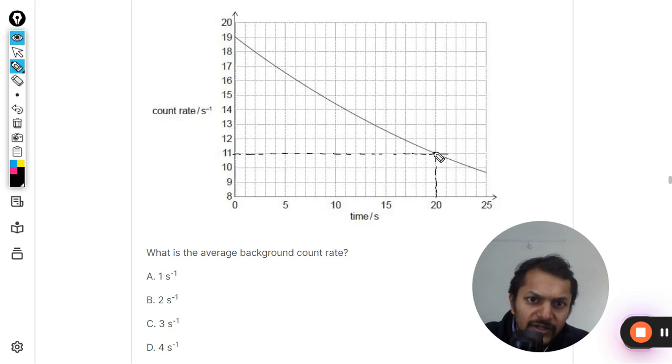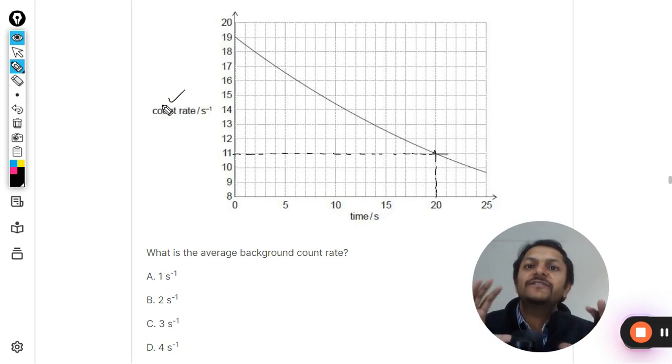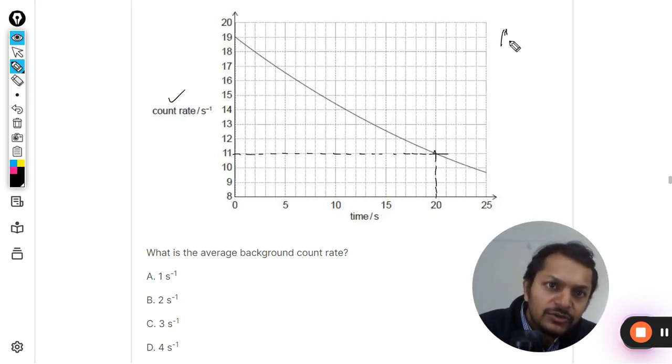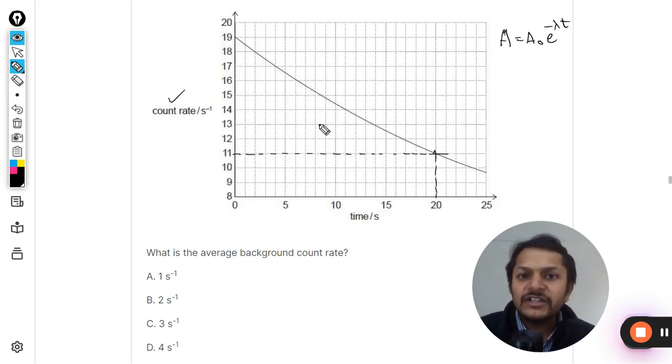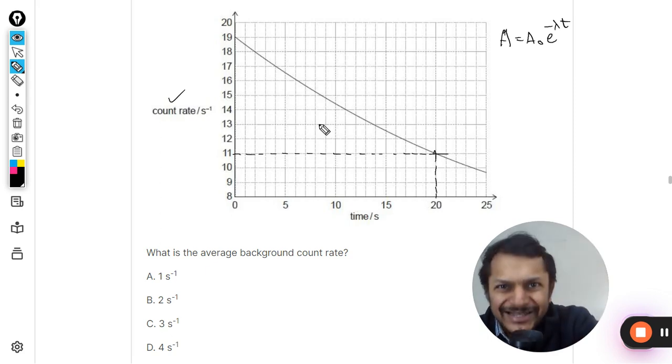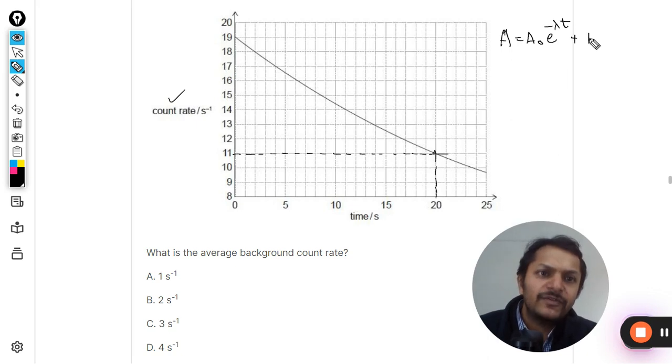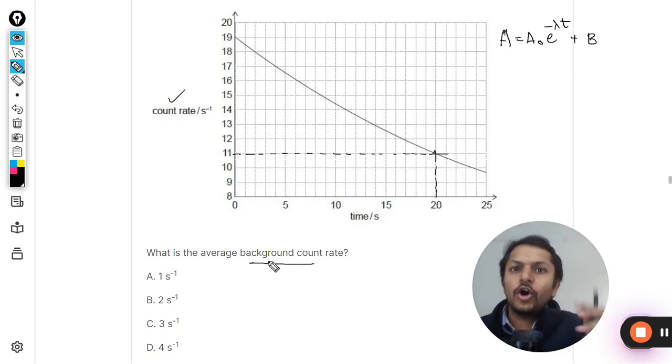What we know is that the count rate as counted by the device is including the background noise also. The activity is A = A₀e^(-λt), this is the exponential curve which this graph should actually be depicting. But it is not the case because there is a background noise and we can call it B, the background count rate.